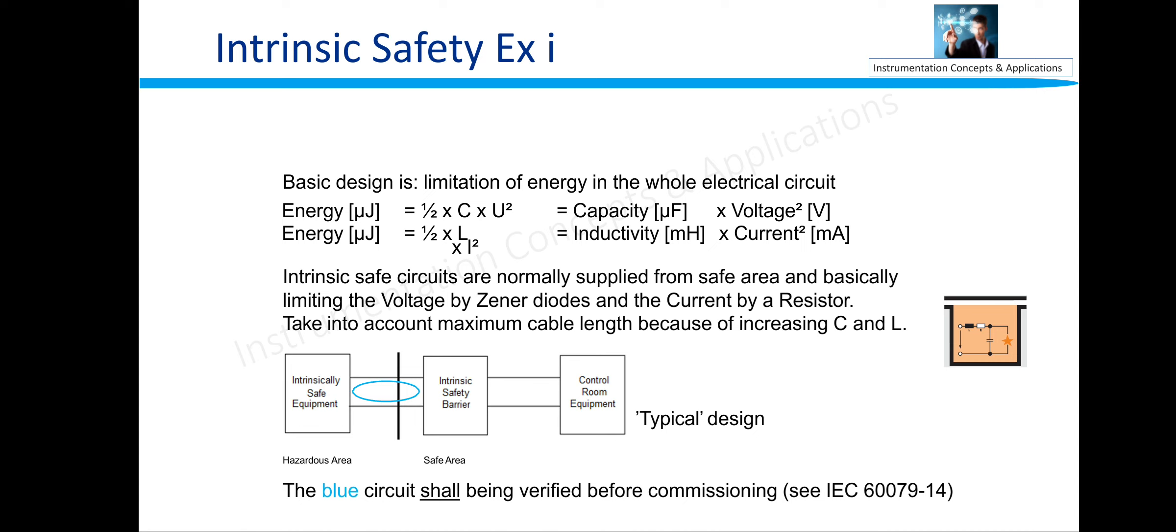Intrinsically safety circuits are normally supplied from safe area and basically limiting the voltage by Zener diodes and current by resistor. In the intrinsically safety barrier we use Zener diodes for limiting the voltage and the resistor for limiting the currents, and by limiting these voltage and currents we are going to restrict the energy going into the field.